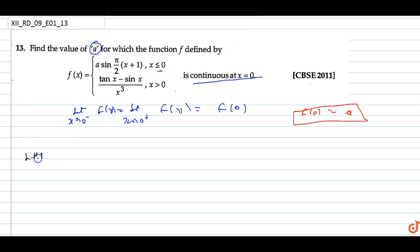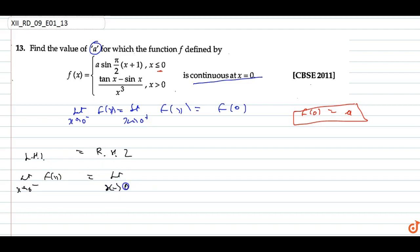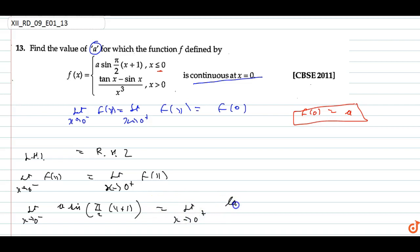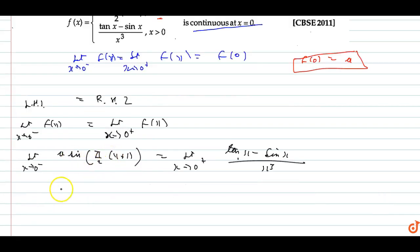For continuity, the left-hand limit equals the right-hand limit. Left-hand limit: limit x tends to zero minus of a·sin(π/2 · x) plus one. Putting x = 0: a·sin(π/2) plus one equals a·1 plus... wait, sin(π/2) is 1, so LHL equals a. Right-hand limit: limit x tends to zero plus of (tan x − sin x) upon x³.